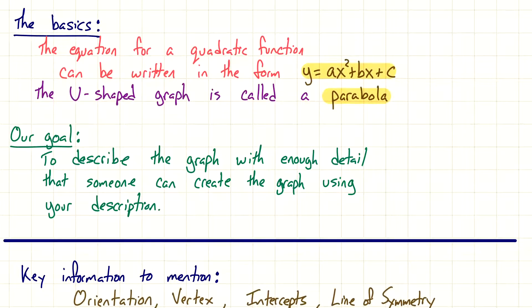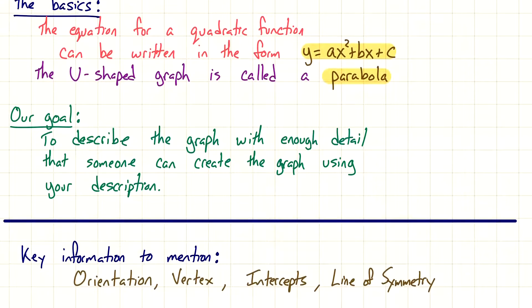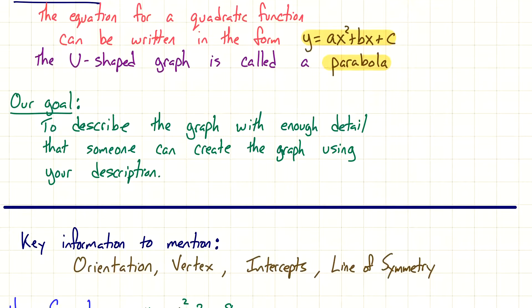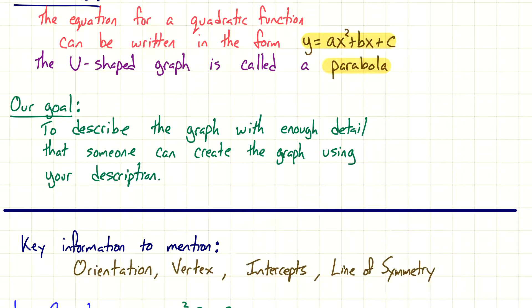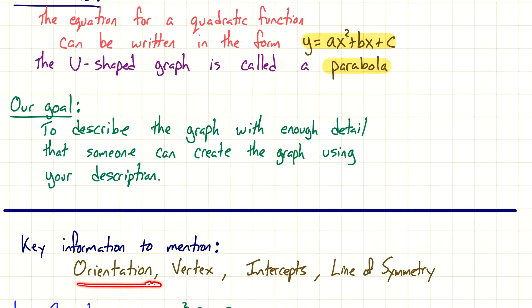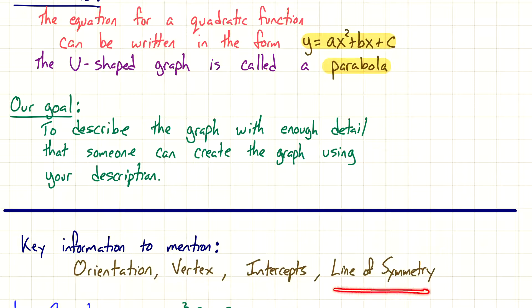There's a lot of information we can focus on, but I'm going to focus on these four key things. The first one is orientation, which means what direction is it facing. Then the vertex, which is either the bottom or the top of the graph — where is it located? Intercepts would be either X-intercepts or Y-intercepts. And then line of symmetry.